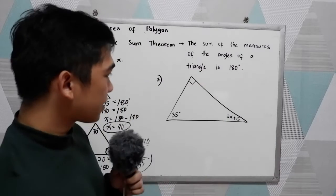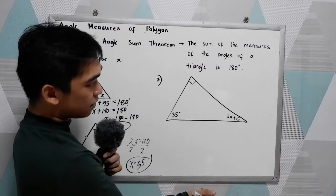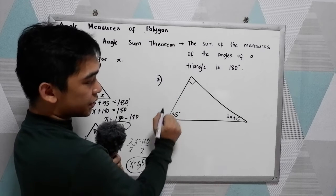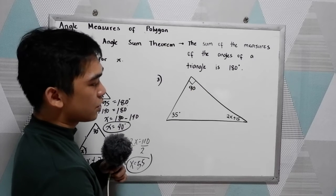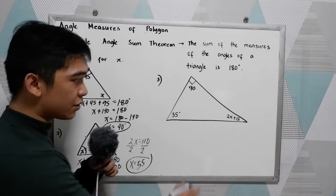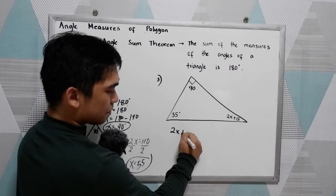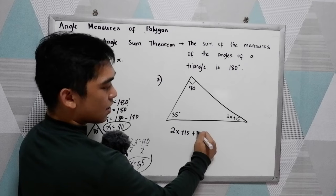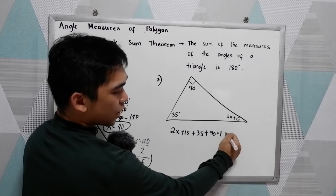Now number three. Study our figure. Triangle. And we have a perpendicular here. Therefore, that is 90. So solve for x. We know that if we're going to add 2x plus 15 plus 35 plus 90 is equal to 180.